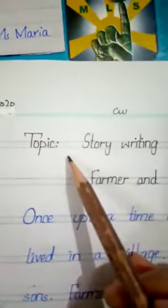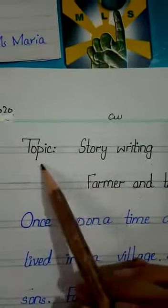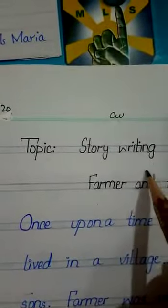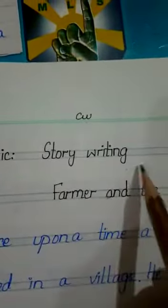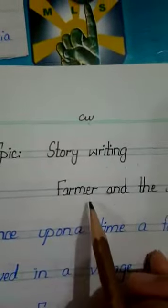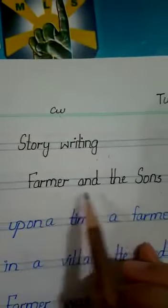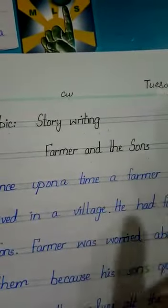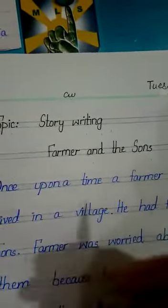Now move towards the topic. Today we are going to do story writing. Write it like that — topic: story writing. The story we are going to do today is 'Farmer and the Sun.' Now put your black pens aside and take your blue pen.